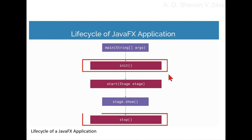Here, the public void init method in class Application, package javafx.application, module javafx.graphics. The application init method is called immediately after the application class is loaded and constructed. An application may override this method to perform initialization prior to the actual starting of the application.